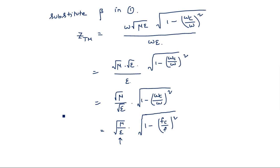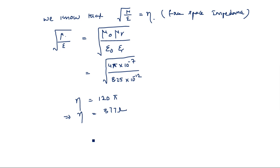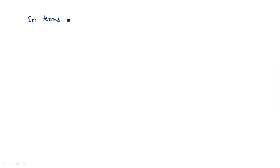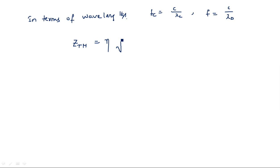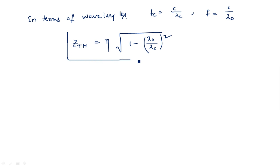Replacing that value, Z_TM equals eta times square root of 1 minus (f_C/f)². In terms of wavelength, since f_C equals c/lambda_C and f equals c/lambda_naught, substituting and canceling c gives Z_TM equals eta times square root of 1 minus (lambda_naught/lambda_C)². This is the wave impedance for TM wave.